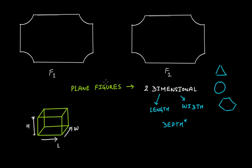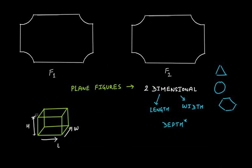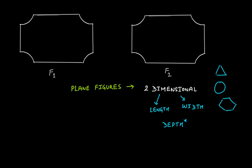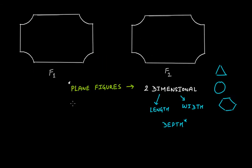So in this discussion on congruent and congruence, we will just focus on plane figures, that is figures that are two-dimensional and not three-dimensional. I explained what we mean by plane figures and the difference between two-dimensional and three-dimensional so that things are clear in your mind. This plane figure F1 and this plane figure F2 are of the same size and shape, therefore just like those two objects, these two figures are congruent.